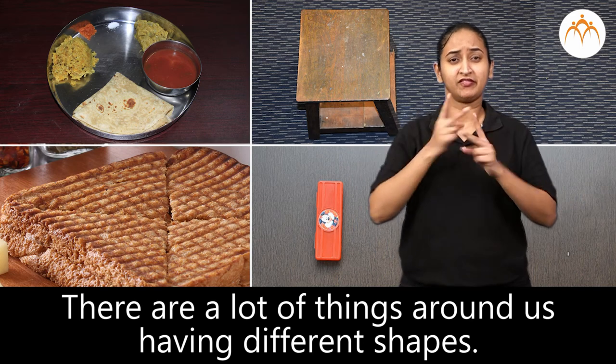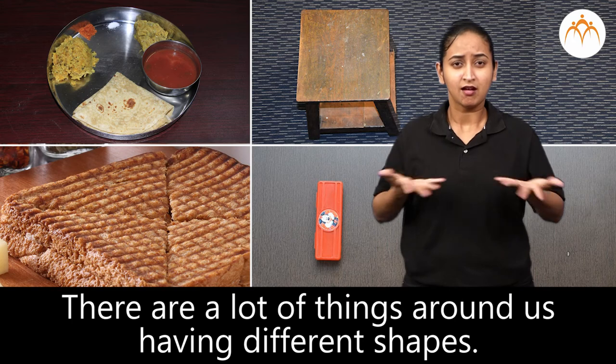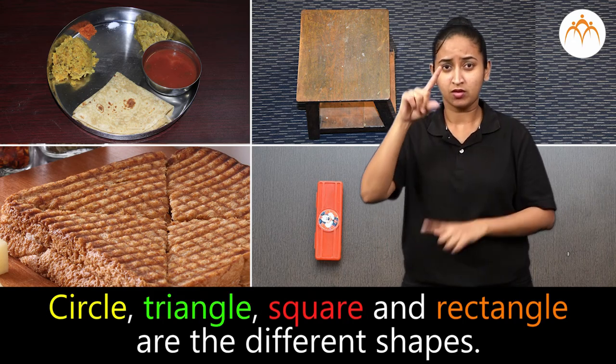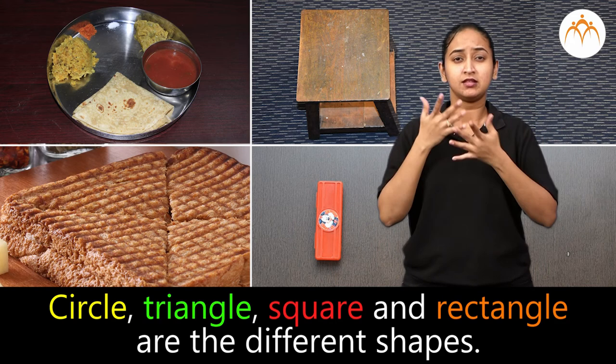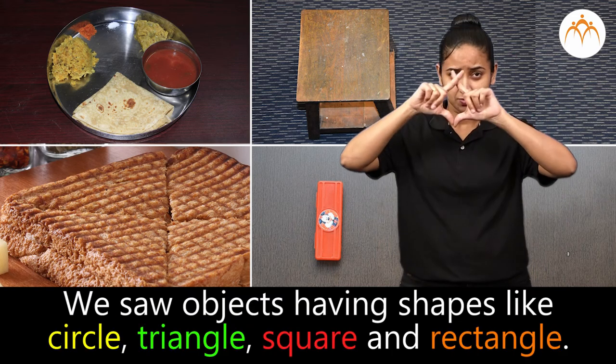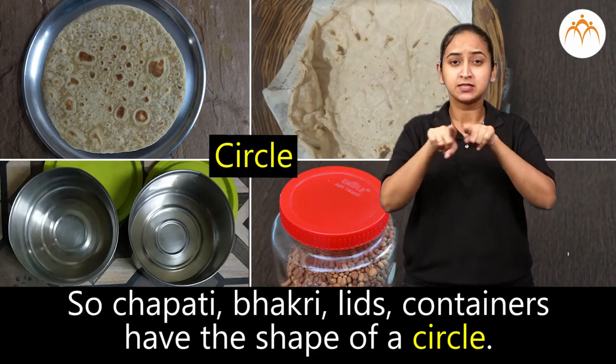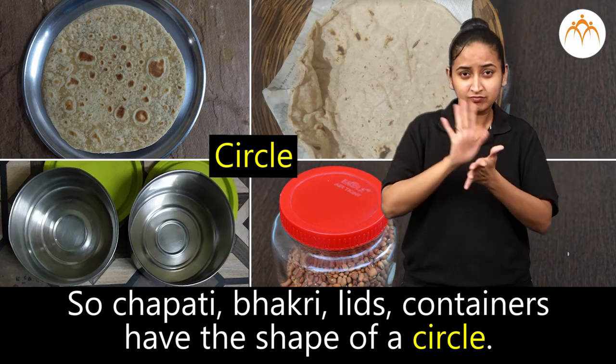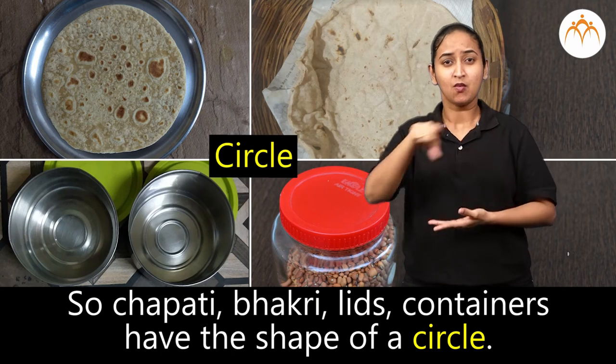What did we learn? There are a lot of things around us having different shapes. Circle, triangle, square and rectangle are the different shapes. We saw objects having shapes like circle, triangle, square and rectangle. So chapati, bhakri, lids, containers have the shape of a circle.